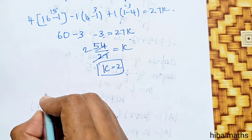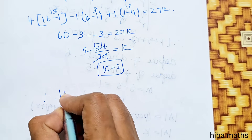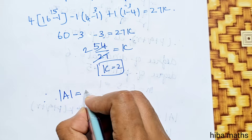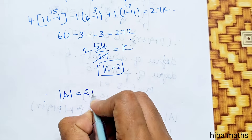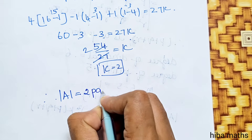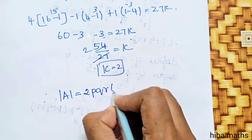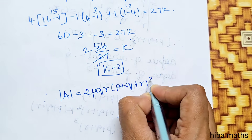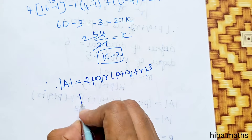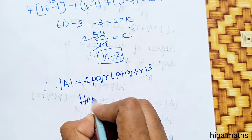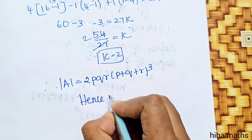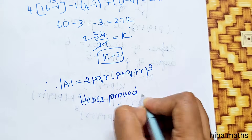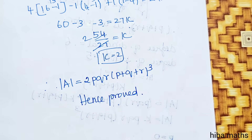Therefore modulus of A equals 2·PQR·(P+Q+R)³. Hence proved.